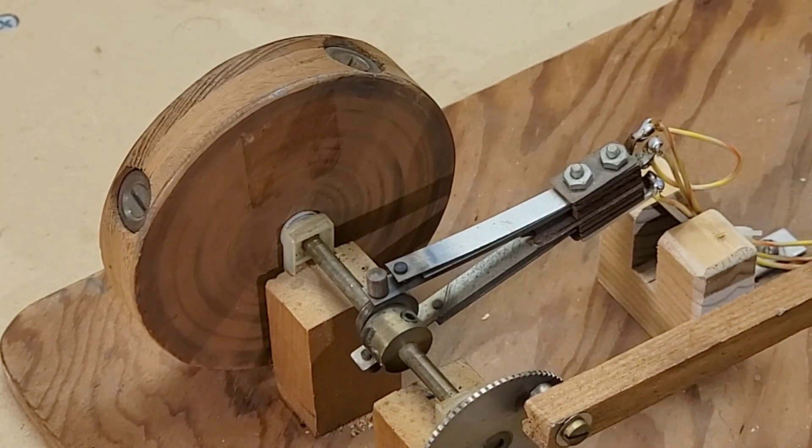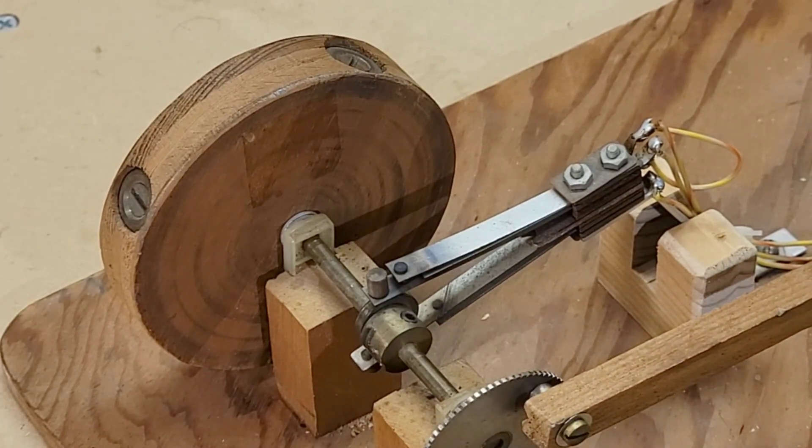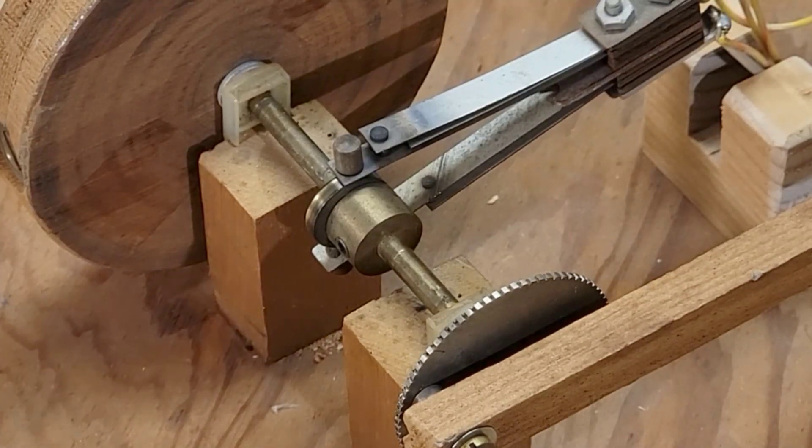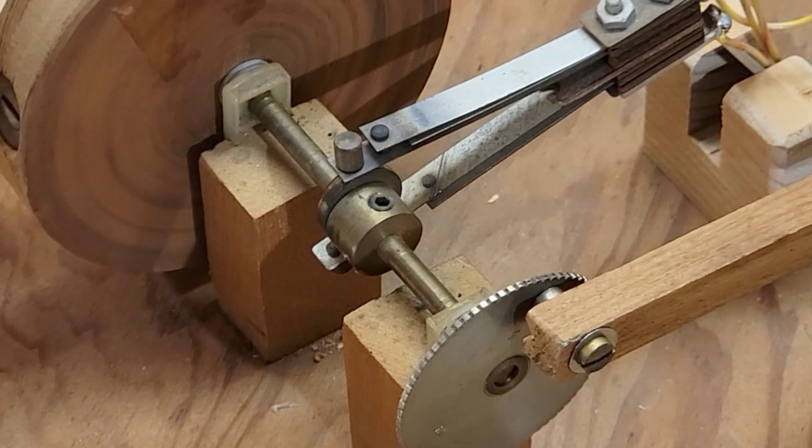The crankshaft is a brass rod held in place by two small nylon blocks.